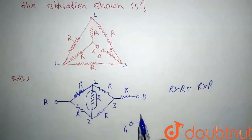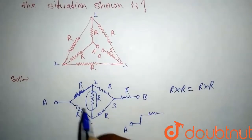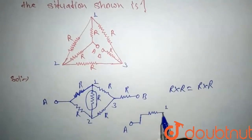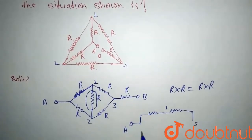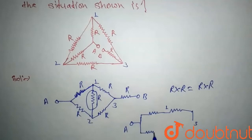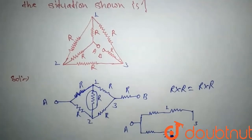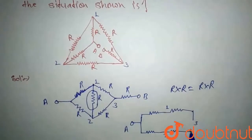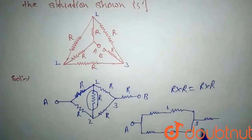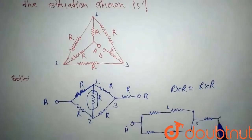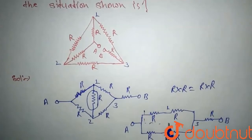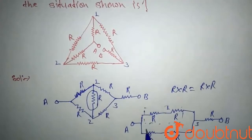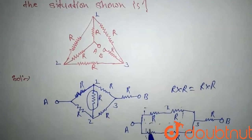Redrawing the diagram: from A, there is resistance R to point one and resistance R to point two. From point one, there is resistance R to point three. From point two, there is resistance R to point three. Between point three and B, there is a resistance R.